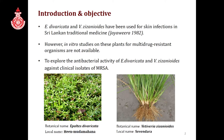Hippeltis divaricata, known in Sinhala as 'Mudamana,' and Vetiveria zizanioides, known as 'Savandra,' have been used in treating skin infections in Sri Lankan traditional medicine. However, in vitro studies on these plants against multi-drug resistant organisms were not available. Our objective was to find the antibacterial activity of these two plants against clinical isolates of MRSA.